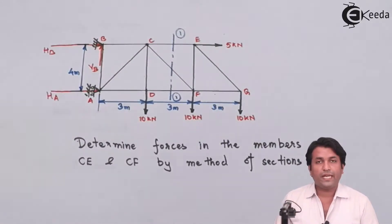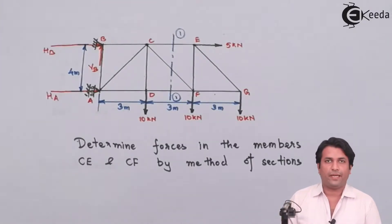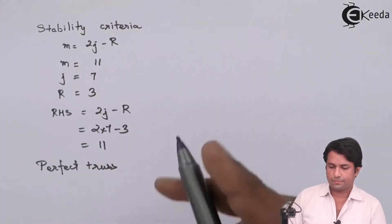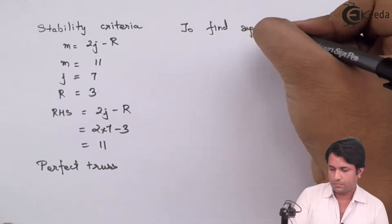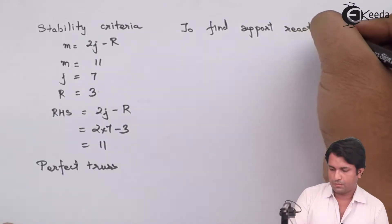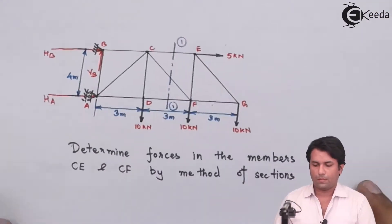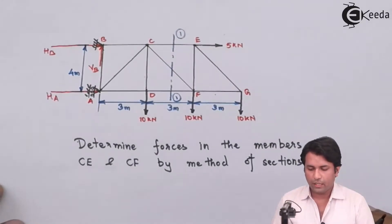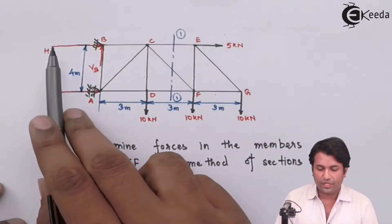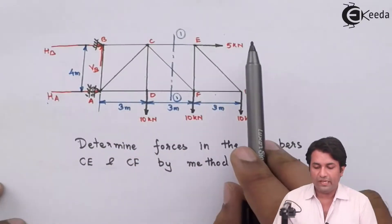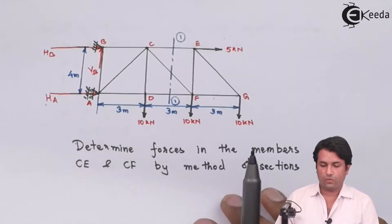Now I need to apply the conditions of equilibrium and find out the support reactions. Looking at the figure, I have two horizontal reactions HA and HB, and only one horizontal force, which is the 5 kN force.